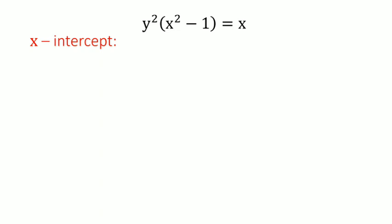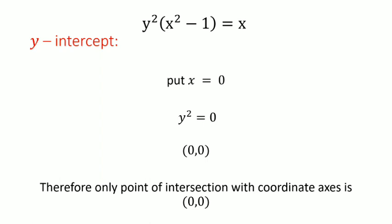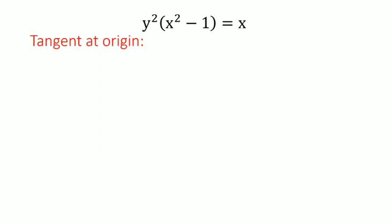Now we'll check the x-intercept. To check the x-intercept, we put y = 0 in the equation, and we get x = 0, so the curve passes through (0, 0). To check the y-intercept, we put x = 0 in the equation and get y² = 0, that is y = 0. Therefore, the only point of intersection with the coordinate axes is (0, 0).